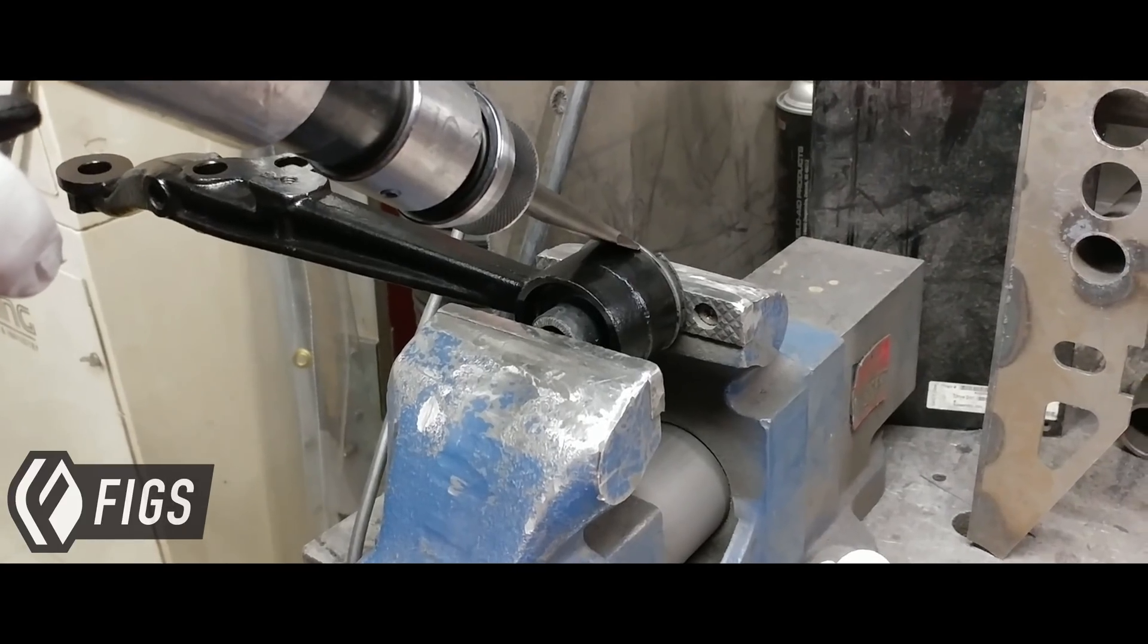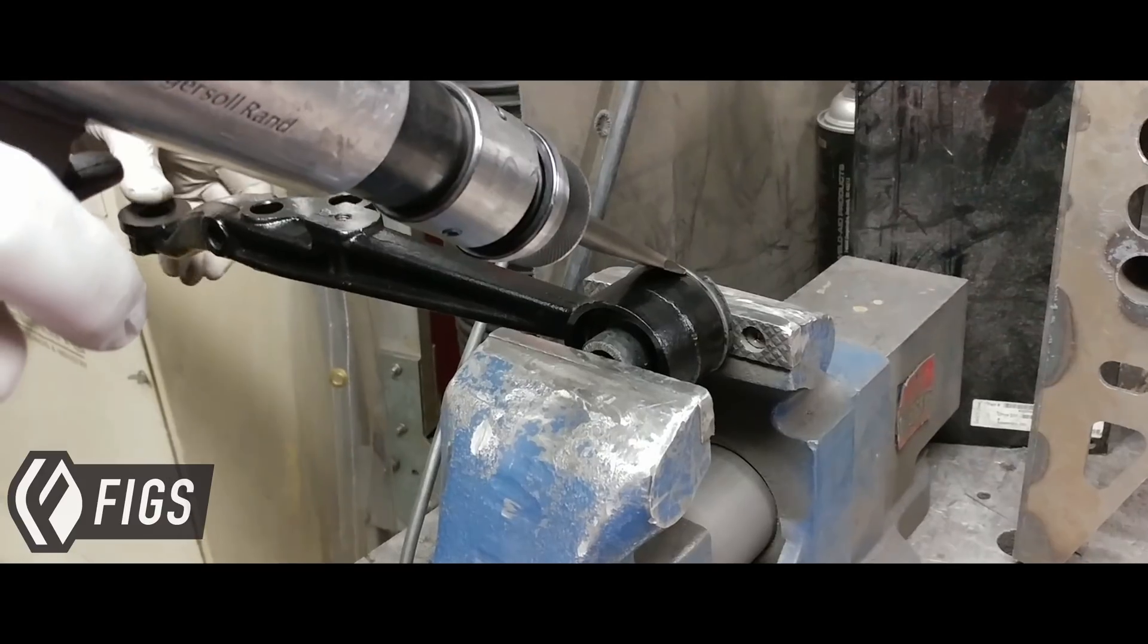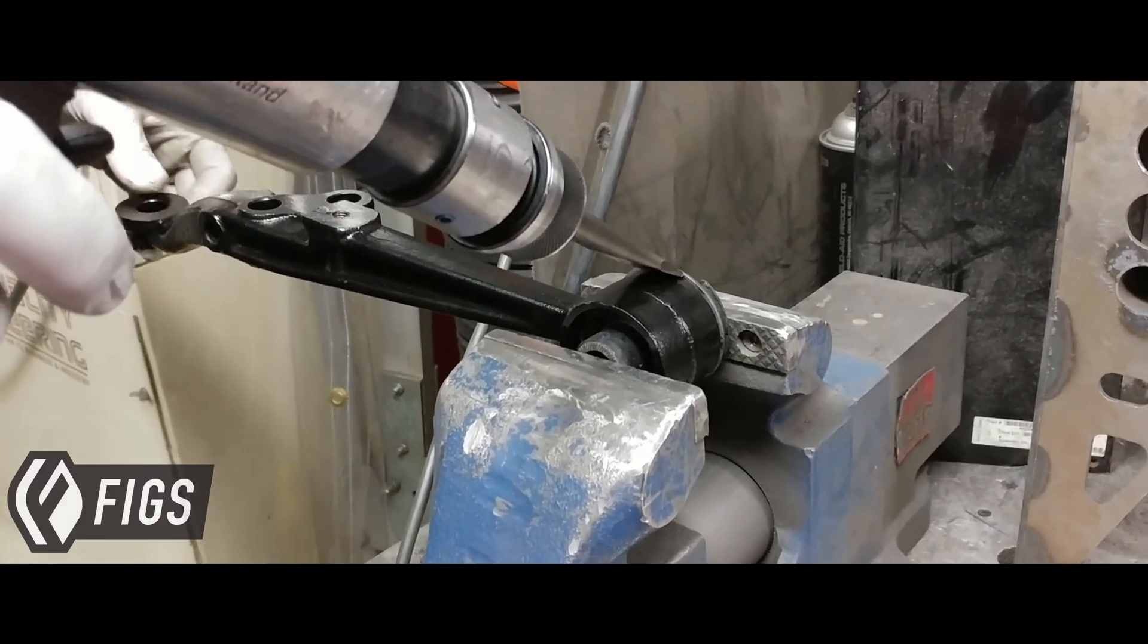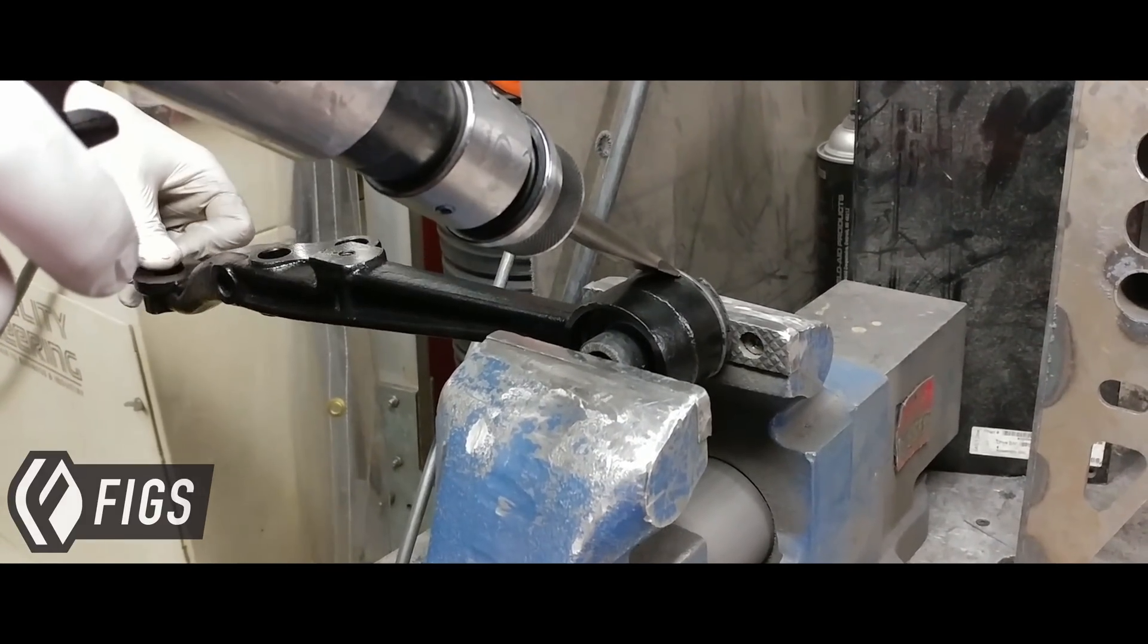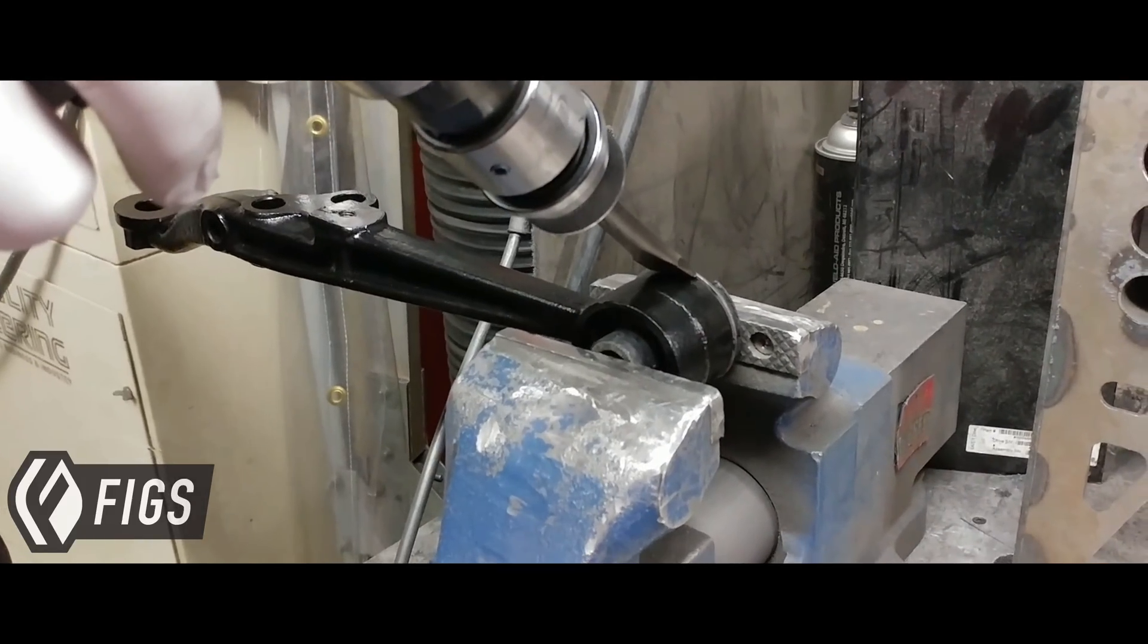So you can see we're using a flat chisel end on an air chisel. This is actually an Ingersoll Rand air chisel, it's one of the nicer ones we found. You can get a cheap Harbor Freight one though, probably do about the same. Ingersoll Rand is just a little bit easier to control. So we fold that guy over, looks like this.